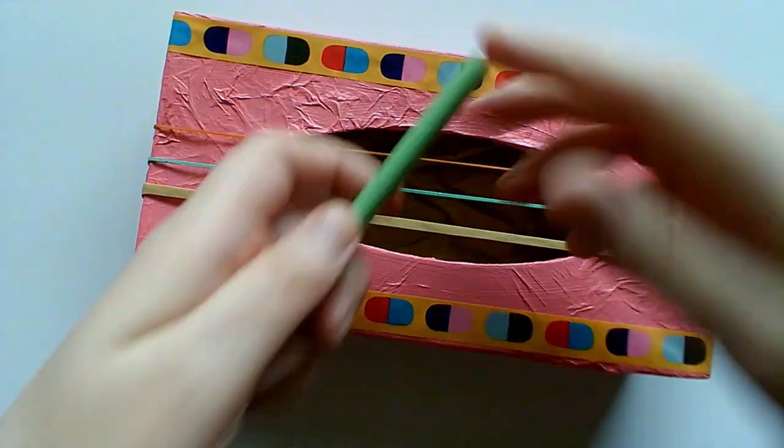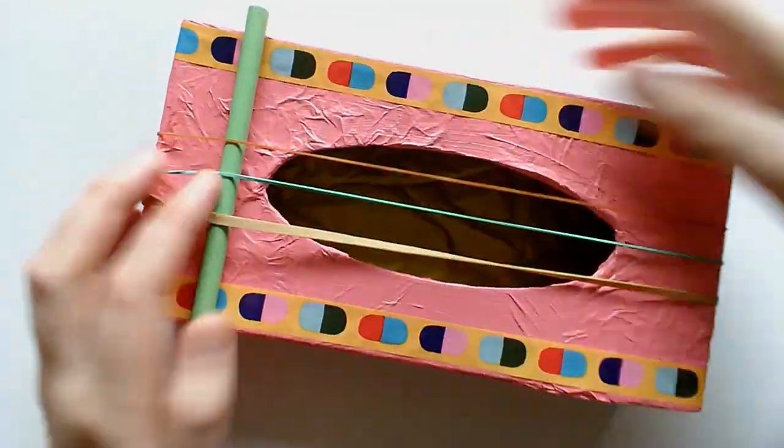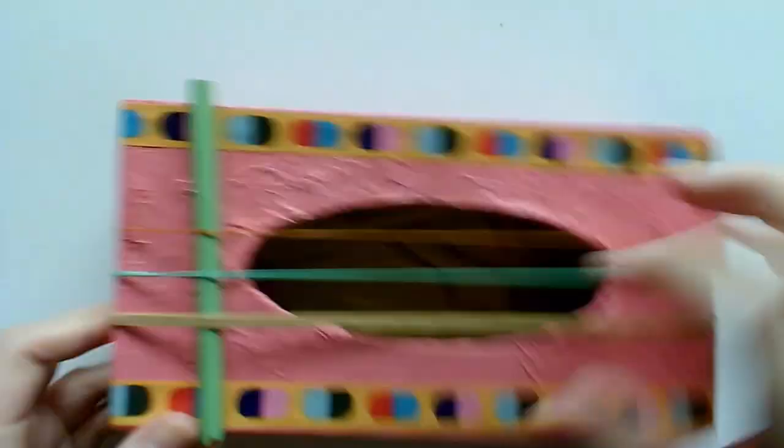To make it sound even better, slip a pencil underneath the three elastic bands to pull them away from the surface of the tissue box.